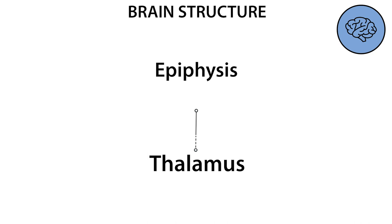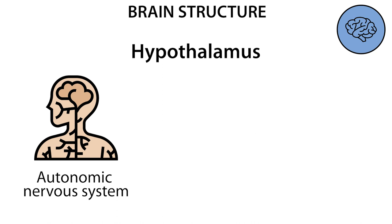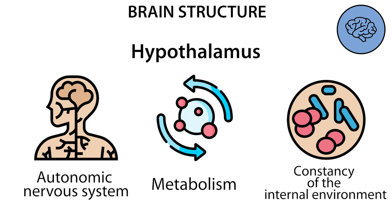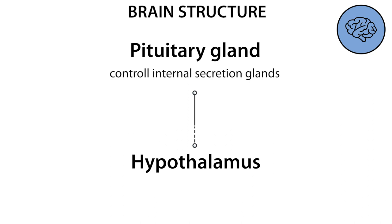The hypothalamus controls the work of the autonomic nervous system, regulates metabolism, ensures the constancy of the internal environment of the body. The hypothalamus is connected with the pituitary gland, through which the internal secretion glands are controlled.